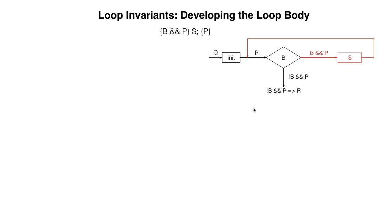The fourth loopy question is: does the repetend keep P true? More formally, does execution of S, the repetend, given the loop condition B and the invariant P, terminate with the invariant P true?